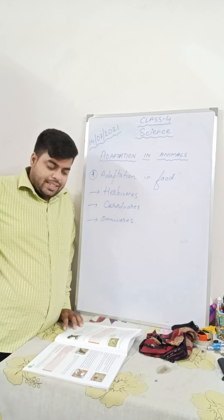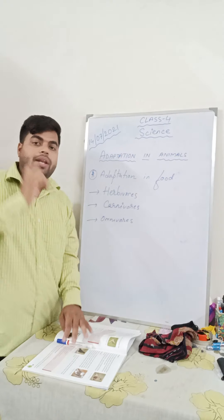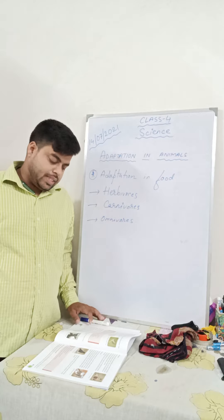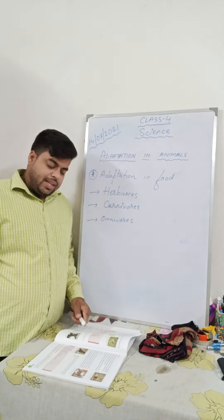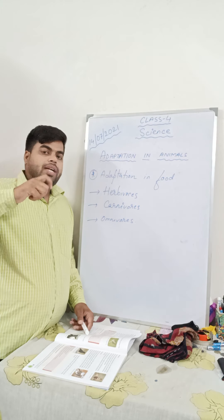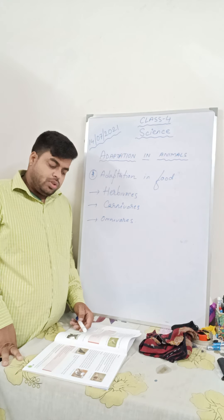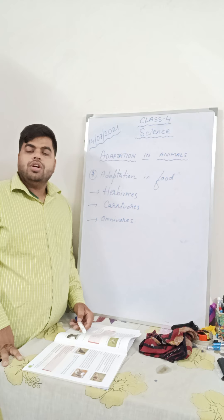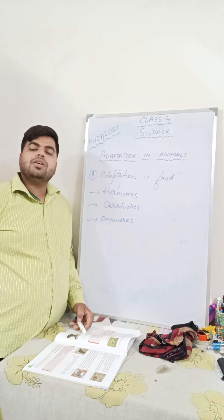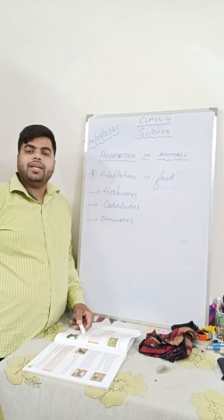Next is carnivorous. Carnivorous are flesh eating animals — for example lion, tiger, and wolves. They have very powerful jaws with which they can tear and chew flesh. They have sharp incisors and pointed canines so that they can hold and tear flesh easily. These sharp incisors and pointed canines help them to catch and tear the flesh of other animals.